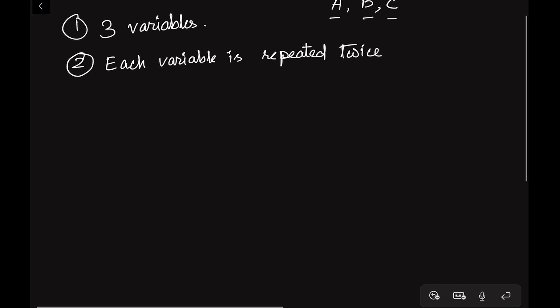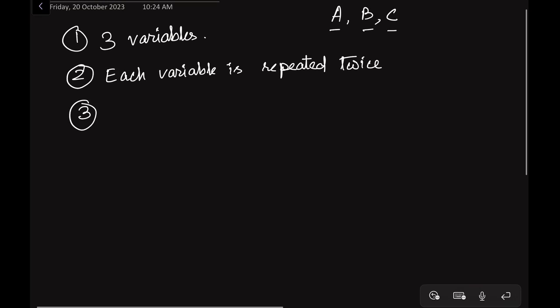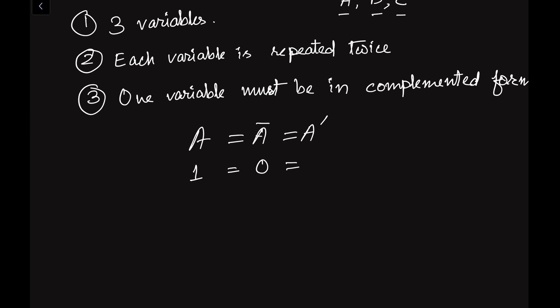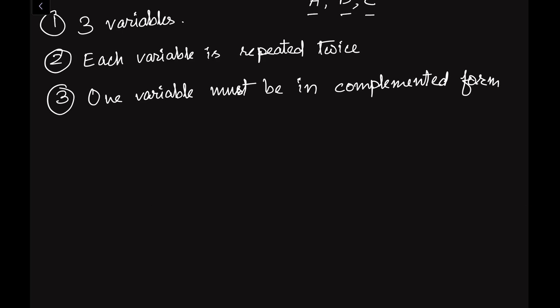The third condition for the Consensus Theorem is that one variable must be in complemented form. For example, the complement of variable A is written as A-bar. If A has value 1, A-complement will be 0. So one variable must be present in complemented form, though it may also be present in normal form — but one of the terms should have a complemented variable.